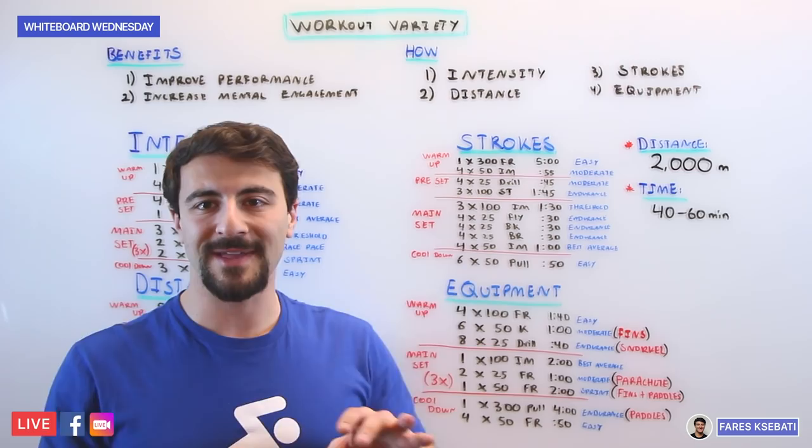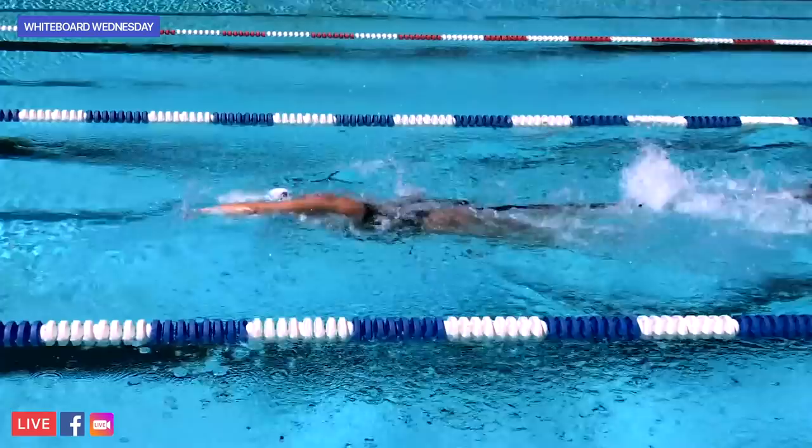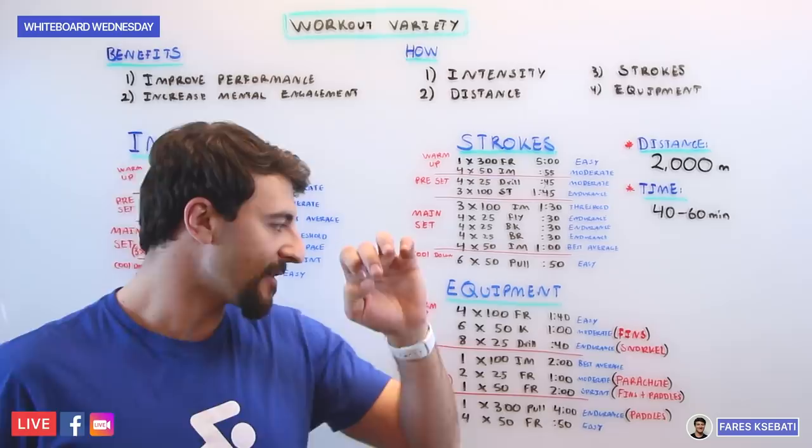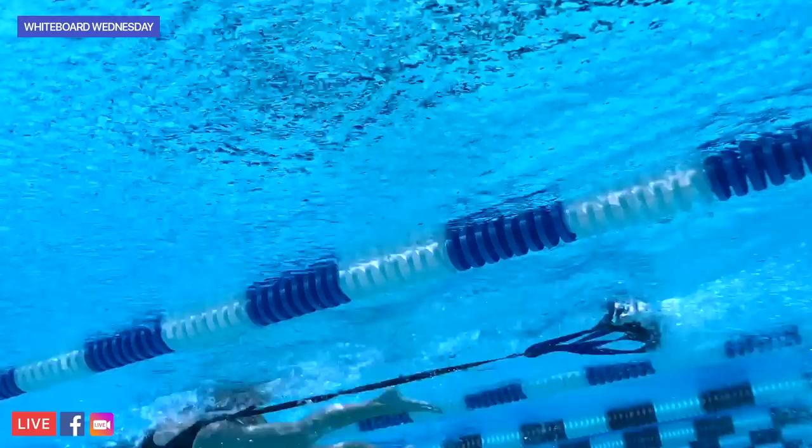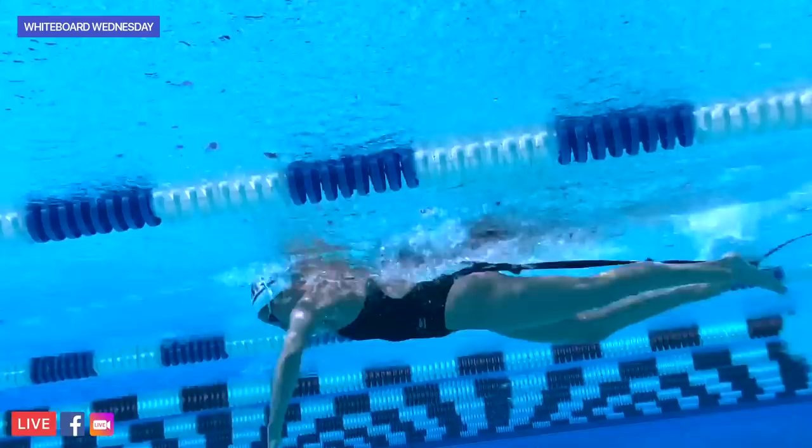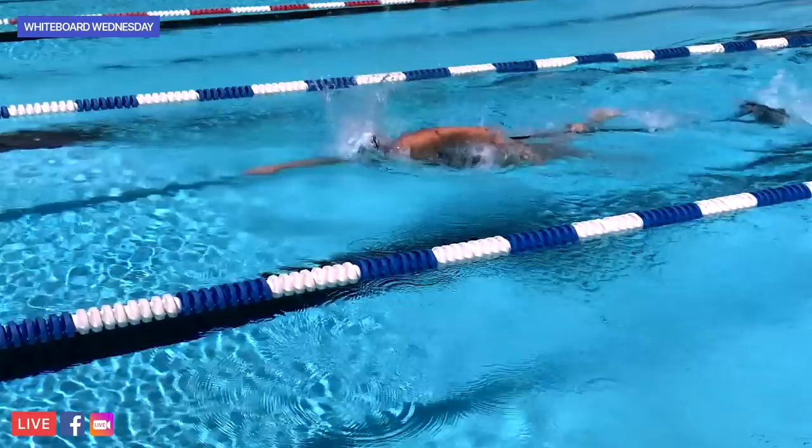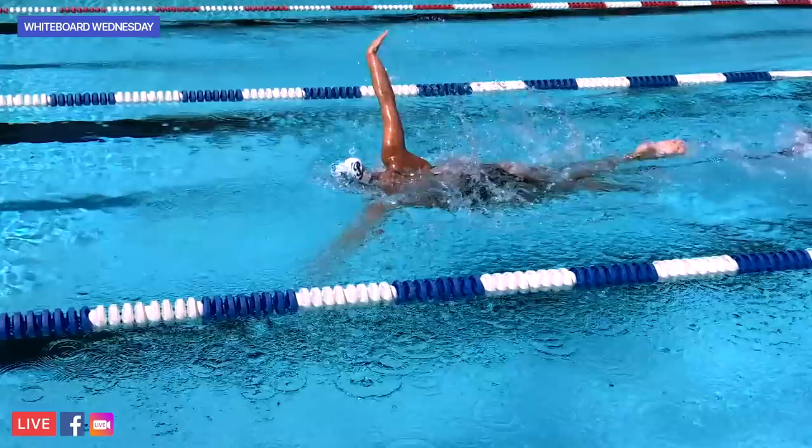Then the main set, we're going to go three rounds. We'll go 100 IM, that's best average. We're going to go 2x25 freestyle with a parachute, so a parachute if you haven't seen one, just as it sounds, it's literally something that drags you. Buckle yourself in and it drags behind you, causes a lot of resistance, catches the water, slows you down, increases your muscular engagement. It's like weight training in the water. And after 2x25s of those, you're going to go a 50 freestyle sprint with fins and paddles.